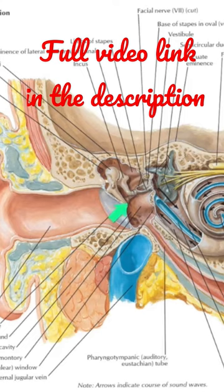This surface receives the attachment of the handle of the malleus, which intervenes between the fibrous and the mucus layer, and it extends from above with a downward and somewhat backward inclination up to the center of the...